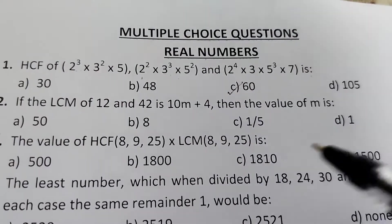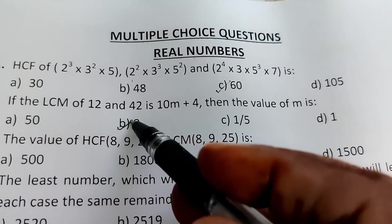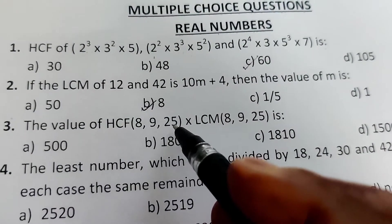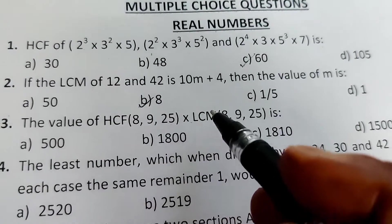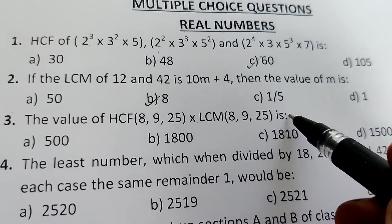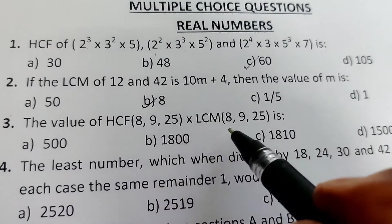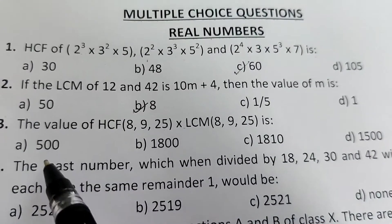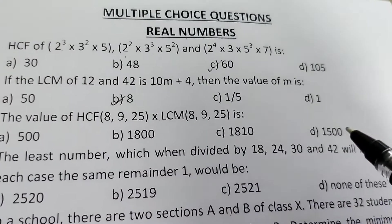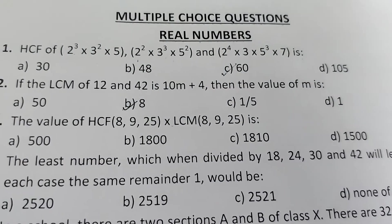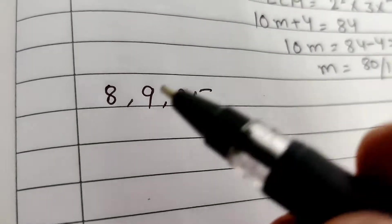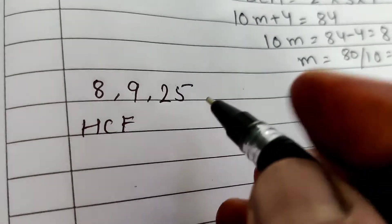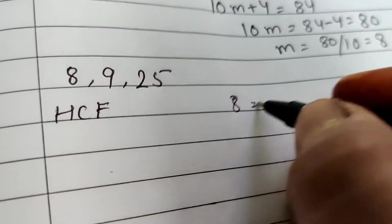Question 3: Find the value of HCF(8, 9, 25) × LCM(8, 9, 25). Options are 500, 1800, 1810, and 1500. We first find the HCF of 8, 9, and 25. For HCF, 8 = 2³.